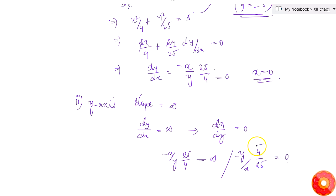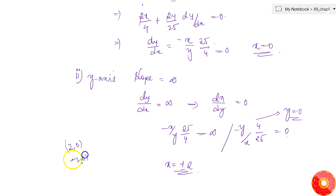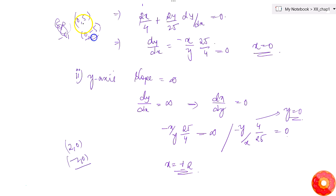From y = 0, putting it in the curve equation gives x²/4 = 1, so x = ±2. So the required points are: (2, 0) and (−2, 0) for tangents parallel to the y-axis, and (0, 5) and (0, −5) for tangents parallel to the x-axis.